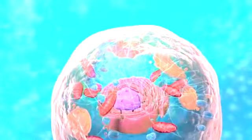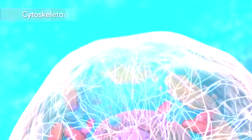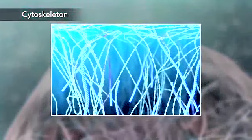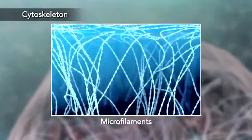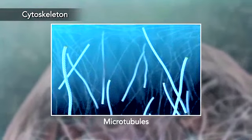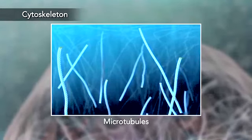Meanwhile, the cell maintains its shape through a cytoskeleton. The cytoskeleton includes the thread-like microfilaments, which are made of protein, and microtubules, which are thin hollow tubes.